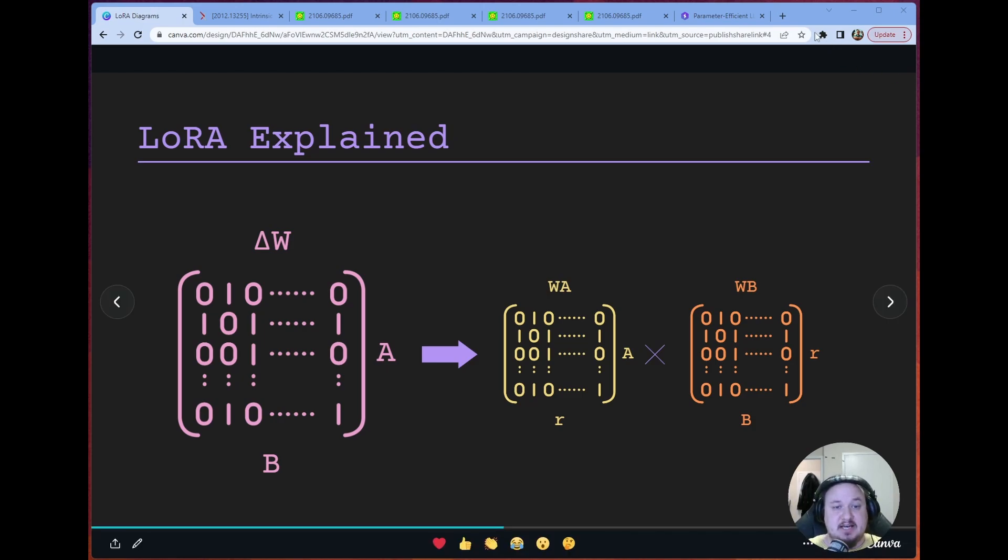So the key insight that the LoRa paper makes is it goes one step further. They hypothesize that the weights also have a low intrinsic rank during adaptation. So what does that mean? Well, if we go back to our diagram, this matrix has dimensions of A by B, but the rank of a matrix isn't equal necessarily to its dimensions. It's equal to the number of linearly independent rows or columns.